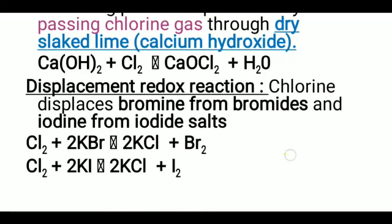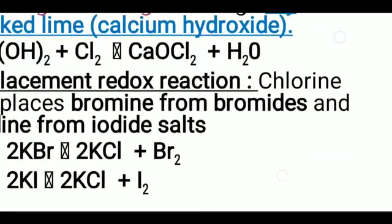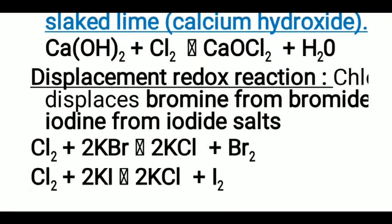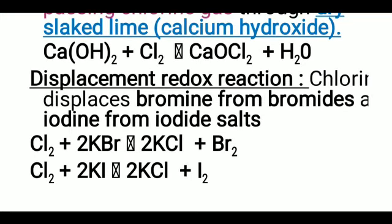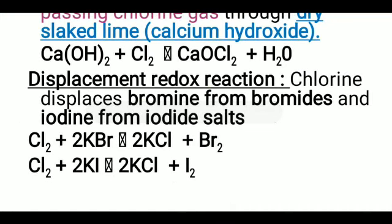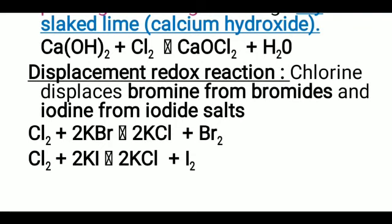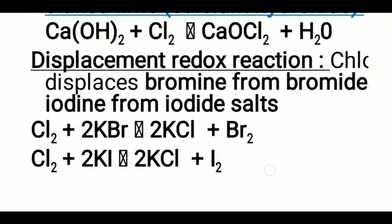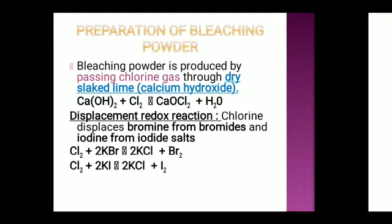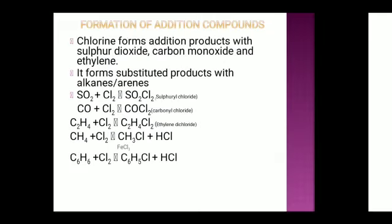Displacement redox reactions: chlorine displaces bromine from bromide and iodine from iodide. Taking potassium bromide and potassium iodide: Cl2 plus 2KBr gives 2KCl plus Br2. From KBr we get Br2, and from KI we get I2.